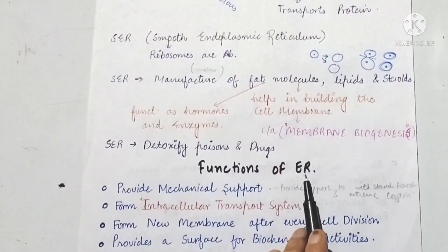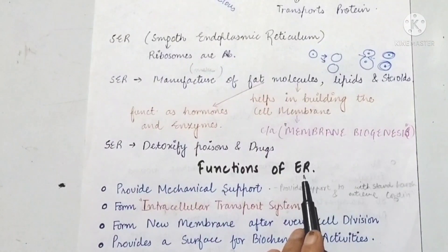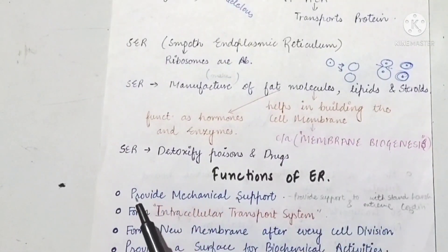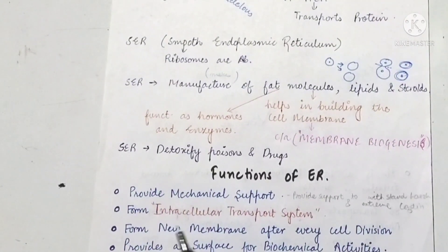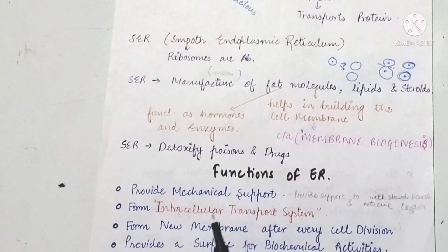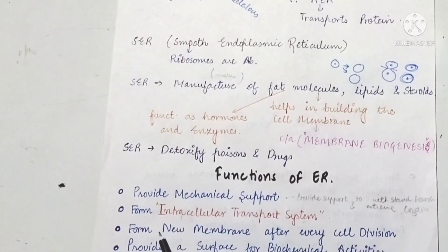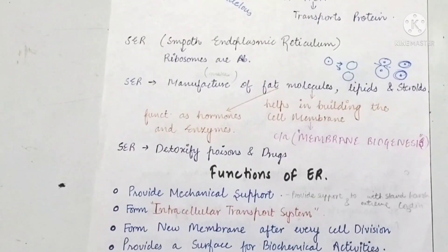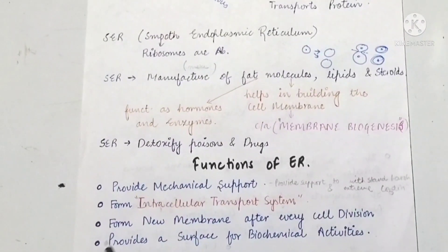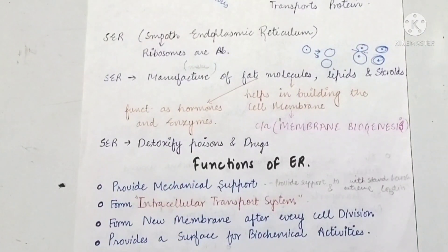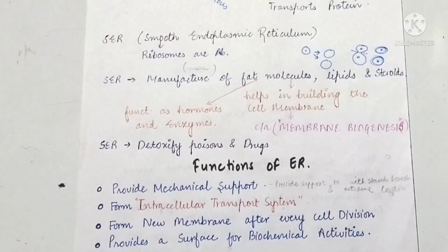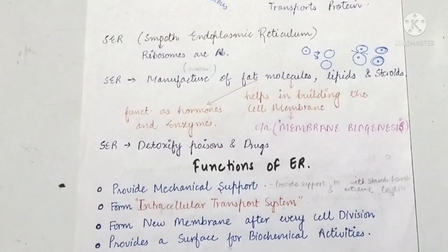Now let's look at the functions of endoplasmic reticulum. First, endoplasmic reticulum provides mechanical support to the cell, helping the cell survive under harsh or extreme conditions. Second, it provides an intracellular transport system within the cell, transferring material from one position to another — from position A to position B.